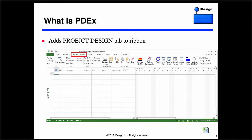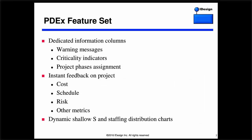Once you install PDX, it adds a new tab to the MS Project ribbon called Project Design. Under that tab on the ribbon you'll find the various features of PDX. PDX adds dedicated information columns that provide constant warning messages about your project design, visual criticality indicators on activities, and allows you to assign phases. It also provides instant quantitative feedback on the project — not an opinion, these are numbers. It's like a pilot cockpit: you get to see the cost, schedule, risk, and various other metrics.